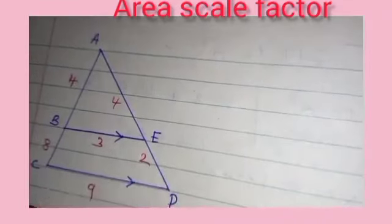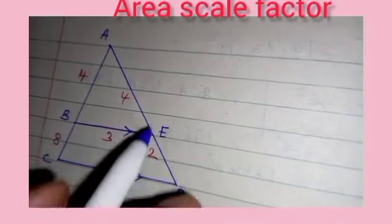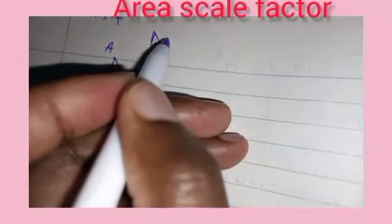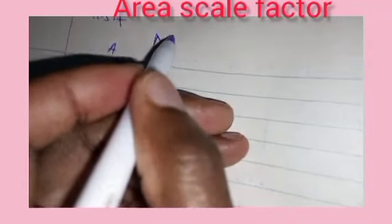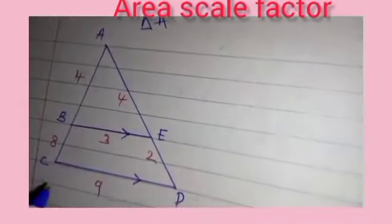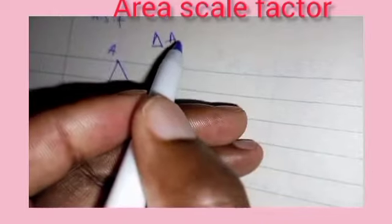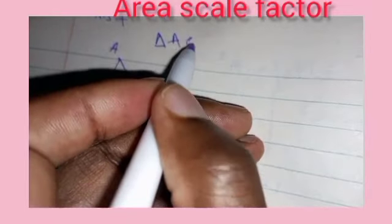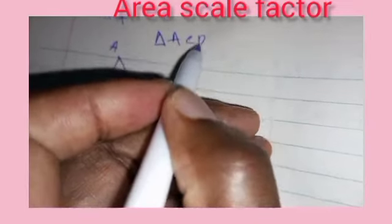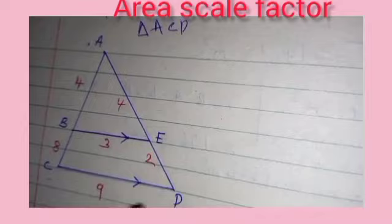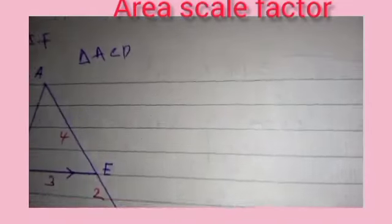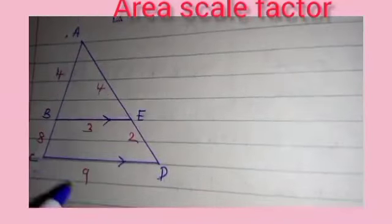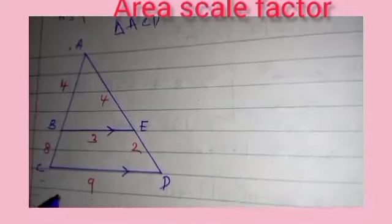To do that we want to consider these two triangles: triangle ACD and triangle ACD. We want to calculate the area of this triangle — this triangle where we have three sides.